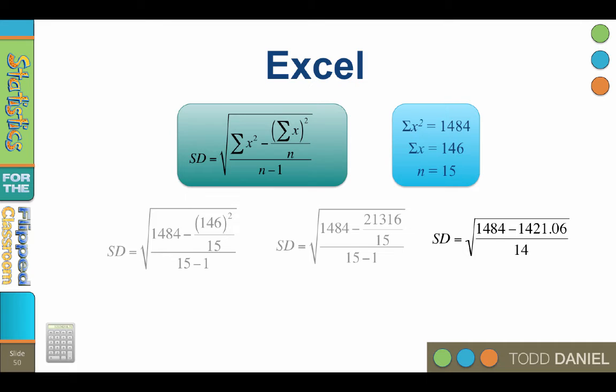In the numerator, 1484 minus 1421.06 is 62.93 with rounding. Now we are ready to divide the ratio. Remember, we can't do this division until we clean up both the numerator and the denominator. The value is 4.4952. Take the square root, and the final answer, rounded to two decimal places, is 2.12.